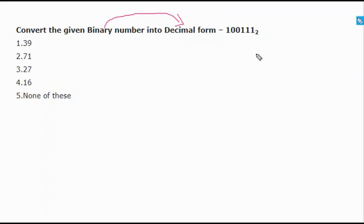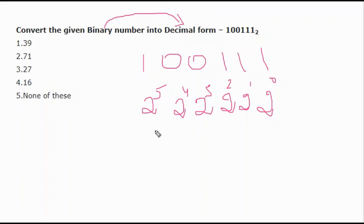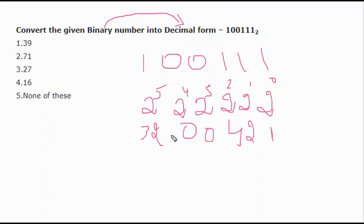For binary to decimal, use the powers of 2 method. Take the binary number 100111. These places represent 2^0, 2^1, 2^2, 2^3, 2^4, 2^5 from right to left. 2^0 = 1, 2^1 = 2, 2^2 = 4 — but since the digit is 0 here, it contributes 0. 2^3 = 0, 2^4 = 0, and 2^5 = 32. Adding the values: 32 + 4 + 2 + 1 = 39.